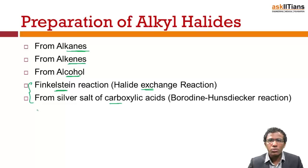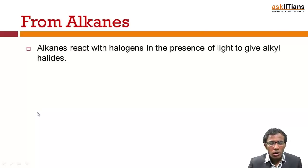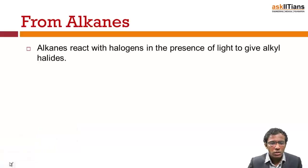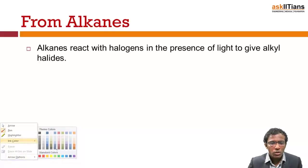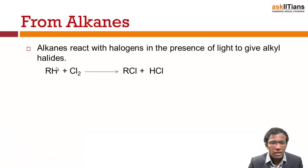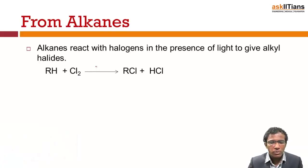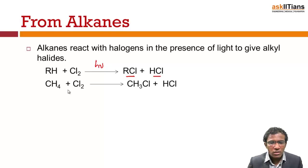Let's see how we can prepare alkyl halides from alkanes first. Alkanes react with halogens in the presence of light to give halides. For example, an alkane reacting with chlorine in the presence of light gives an alkyl halide along with HCl. If I take methane, I get methyl chloride — the reaction between methane and chlorine in the presence of sunlight gives alkyl halides.